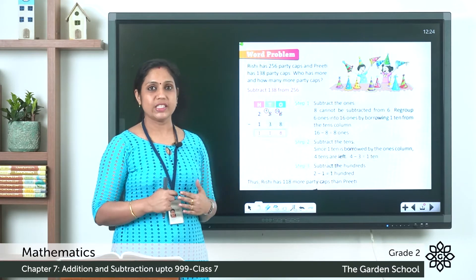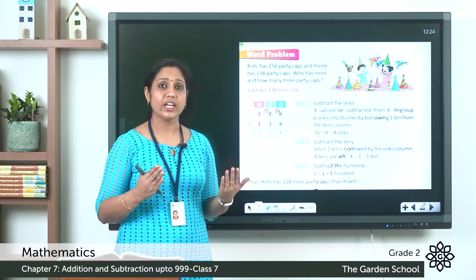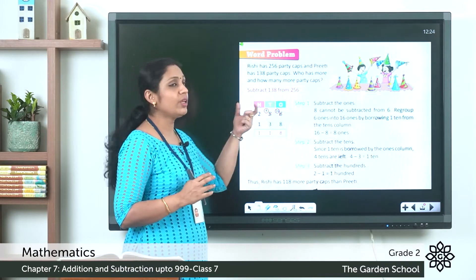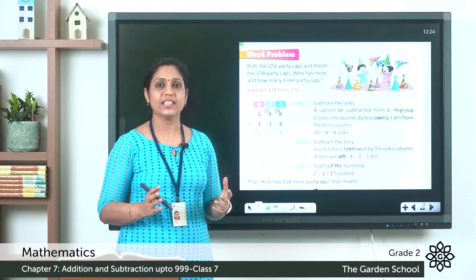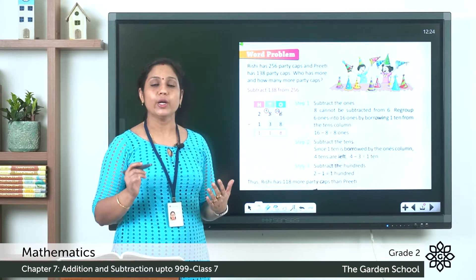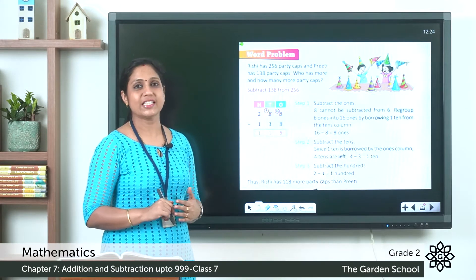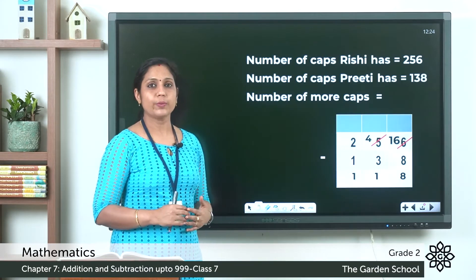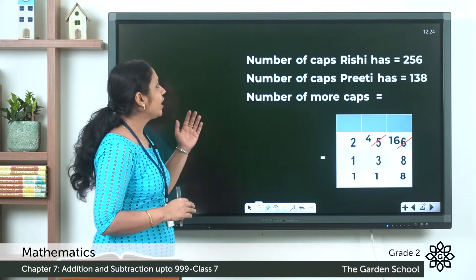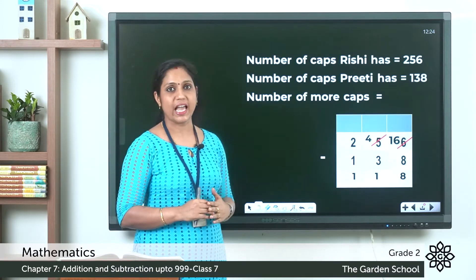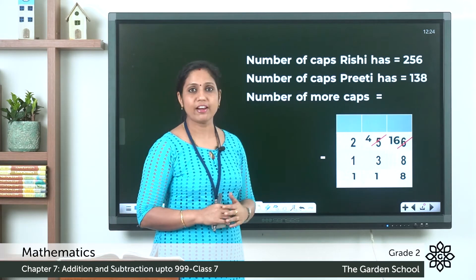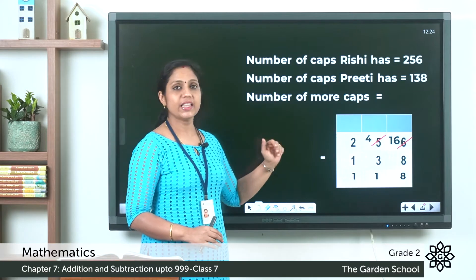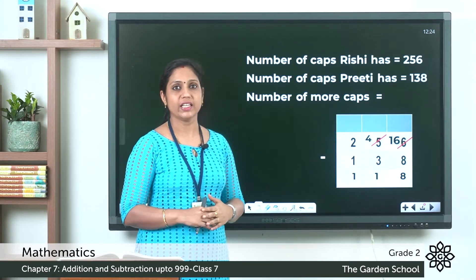When you get a question like this, you have to decide between addition or subtraction. Here we have to find out how many more, and when you get a question like this we find out by doing subtraction. So how can we write the steps for this word problem? Number of caps Rishi has is equal to 256. Number of caps Preeti has is equal to 138.